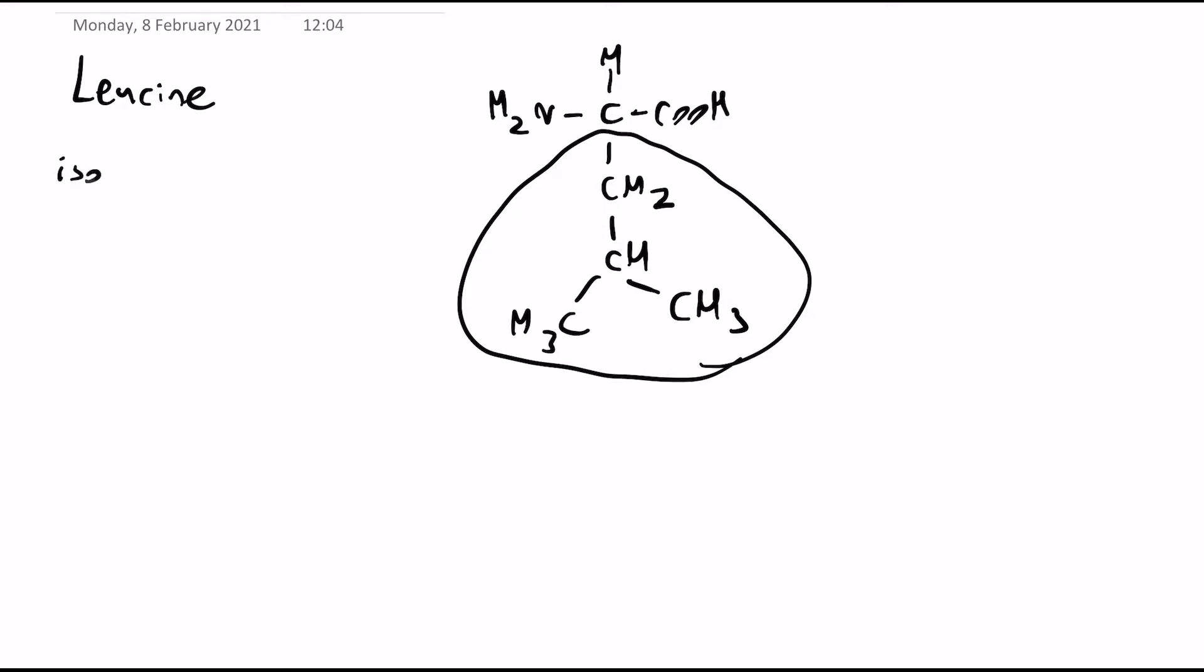Okay, so this group here is called an isobutyl group. As you can probably imagine, it's got four carbons, so hence butyl.